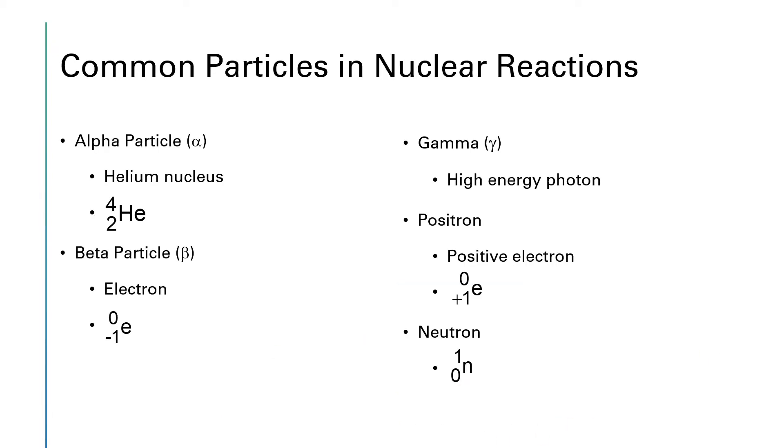There are a lot of particles that commonly appear in nuclear reactions, and you need to be familiar with what these particles are and their symbols. The first of those is what we call the alpha particle, which we saw in the previous slide, which is a helium nucleus. So if we write out the nuclear symbol for it, it's a 4, 2, He. Another particle that appears frequently is a beta particle, which is also known as an electron. And when we're writing nuclear processes, the symbol for an electron is a zero minus one E.